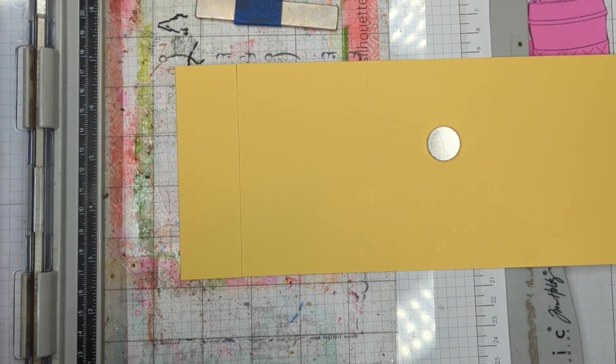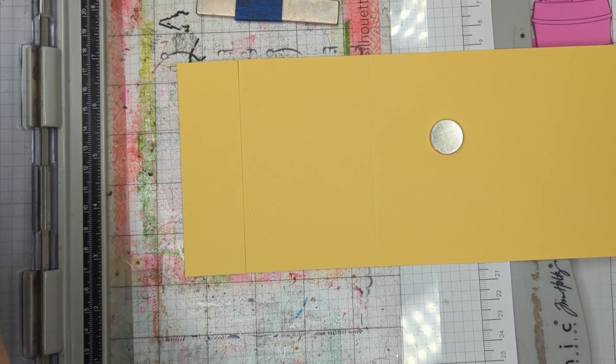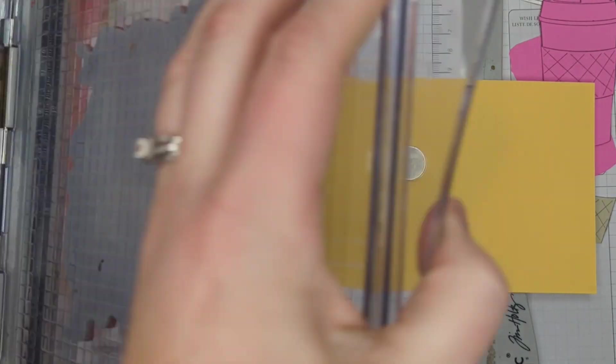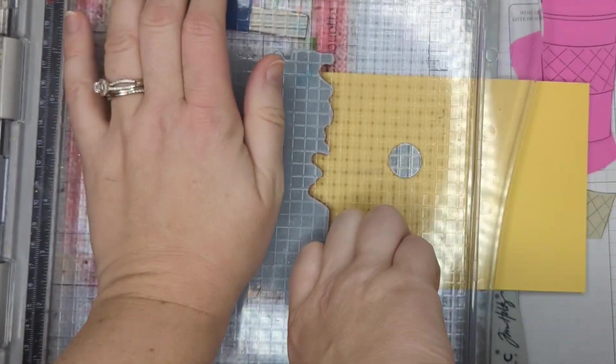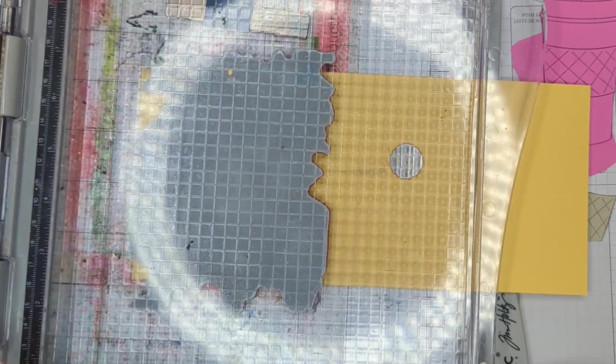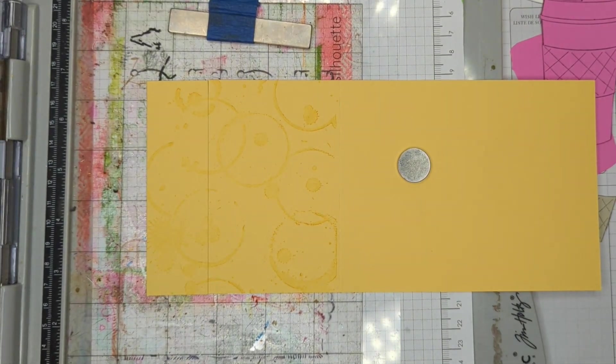And now I'm just going to take yellow ink and stamp on yellow paper. They're the same ink. This is So Saffron paper, and I'm using So Saffron ink, and I like the tone-on-tone that it's going to give us. So it's going to break up that paper without making it overly obnoxious.